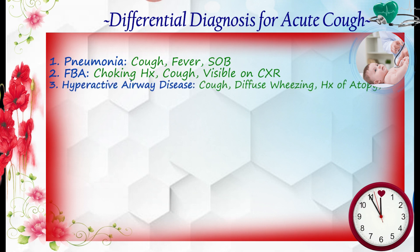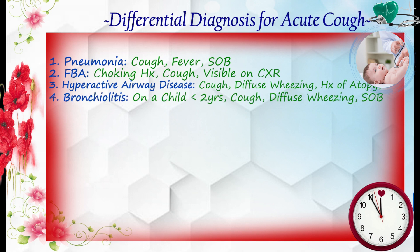Reactive airway disease is usually associated with diffuse wheeze in addition to the cough, and other atopies that we see. The fourth differential is bronchiolitis, which is especially common in children. It occurs when children are under 2 years of age.